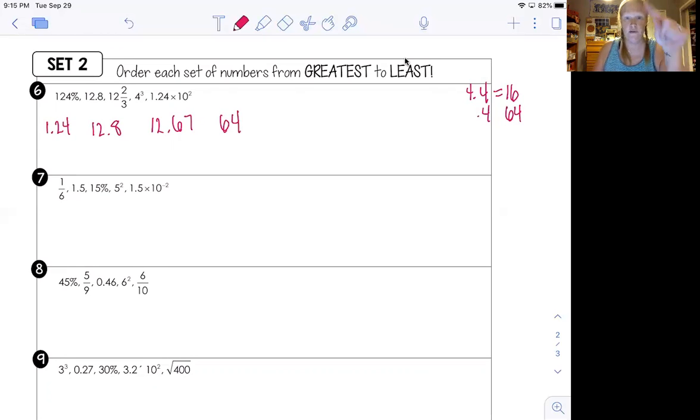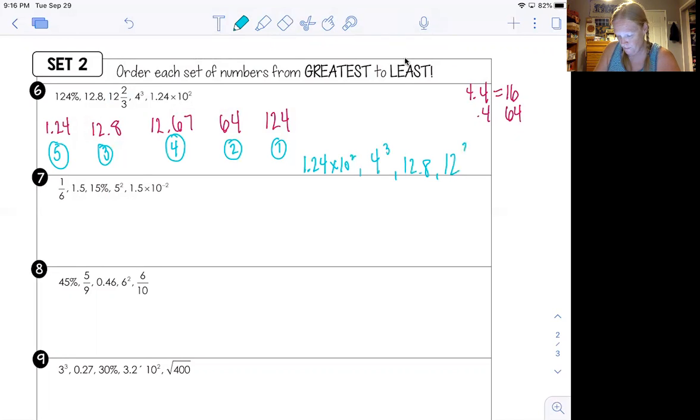And then 1.24 times 10 squared. So move the decimal two places to the right. So 124. Okay, cool. Big to small. We're going the opposite direction. Okay. Don't miss these just because you did the wrong direction. Okay. Biggest number right here, 124. Second biggest number, 64. Third biggest number, 12.8. Fourth biggest number, 12.67. Smallest number, 1.24. Okay, cool. Let's rewrite them in their original form. 1.24 times 10 squared. 64 was four cubed. 12.8 was 12.8. Nice. Like that one. Number four, 12.67 was 12 and two thirds. And the last one was 124%. Okay, cool.